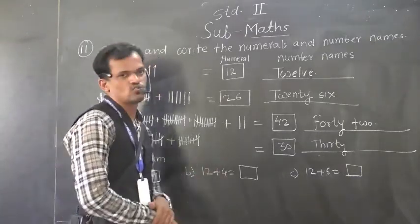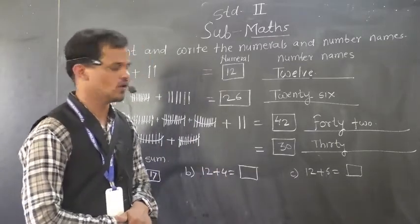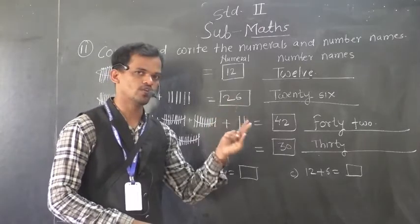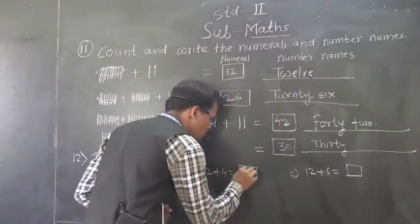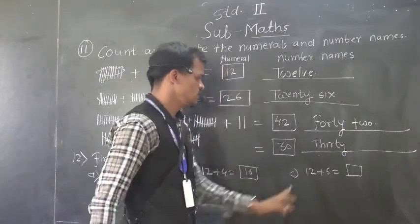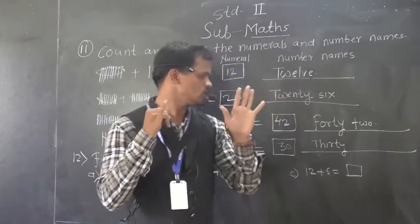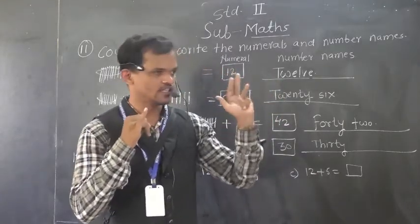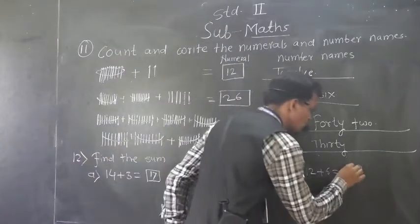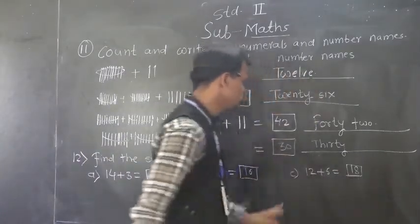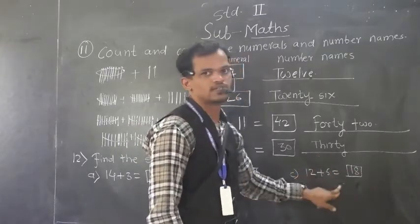So, 17 is the sum of 14 and 3. Then, 12 plus 4. After 12, count whole finger forward. So, 13, 14, 15, 16. So, 12 plus 4, 16. 12 plus 6, after 12, count whole 16. So, after 12, 13, 14, 15, 16, 17, 18. So, 18 is the sum of where and 6.